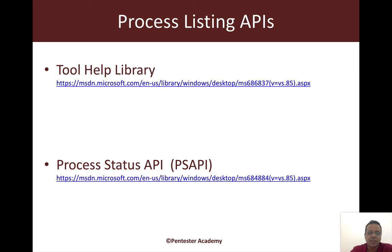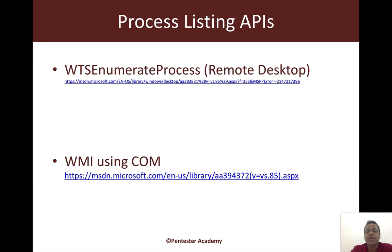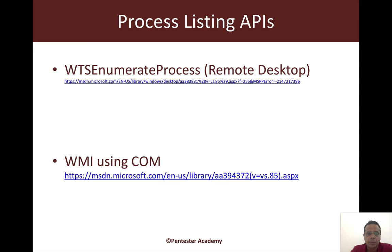There are different APIs available. We could use the ToolHelp library on Windows, the Process Status API. We could even use roundabout ways by using WTS Enumerate Process, which is a Remote Desktop API that can still run in a local context. We could even use WMI using COM. Many different techniques — these are four — and we'll look at a couple of them in the next couple of videos.